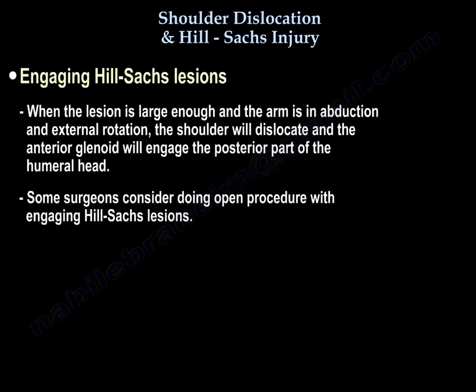Regarding an engaging Hill-Sachs lesion: when the lesion is large enough and the arm is in abduction and external rotation, the shoulder will dislocate and the anterior glenoid will engage the posterior part of the head. Some surgeons consider performing an open procedure with an engaging Hill-Sachs lesion.